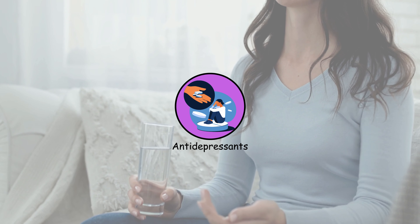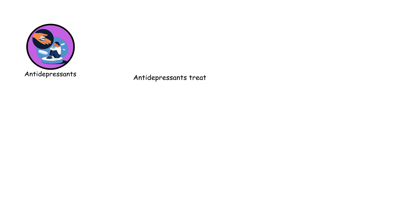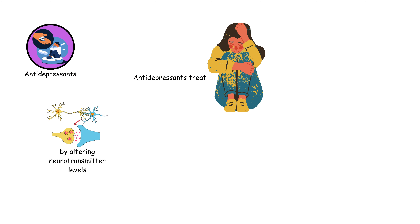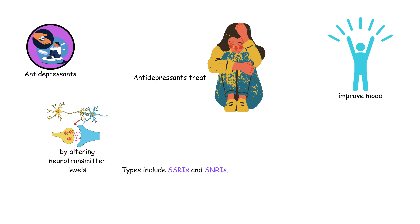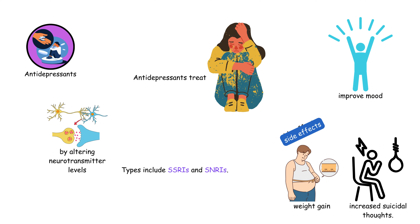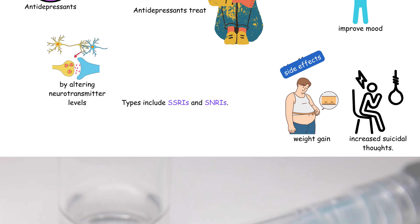Antidepressants treat depression by altering neurotransmitter levels. Types include SSRIs and SNRIs. They can improve mood but may have side effects like weight gain and increased suicidal thoughts.